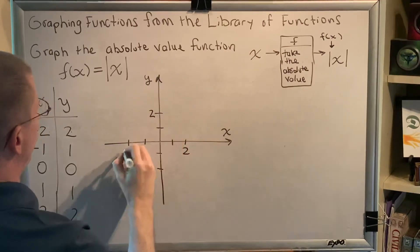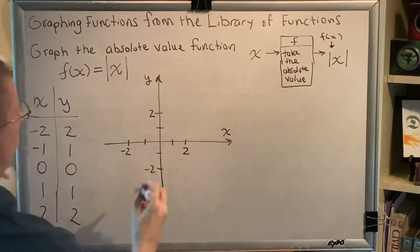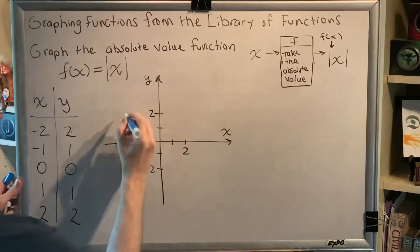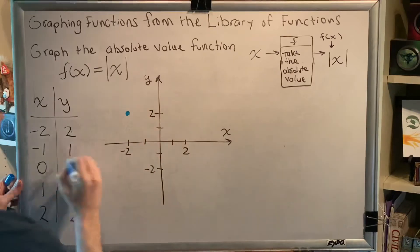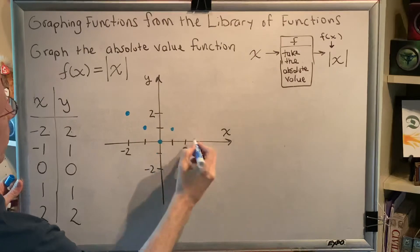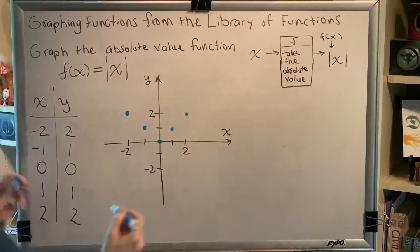Setting up the axes at 2, 2 and negative 2, negative 2. Let's plot our points: negative 2, 2 here; negative 1, 1 here; 0, 0 here; 1, 1 here; 2, 2 here.